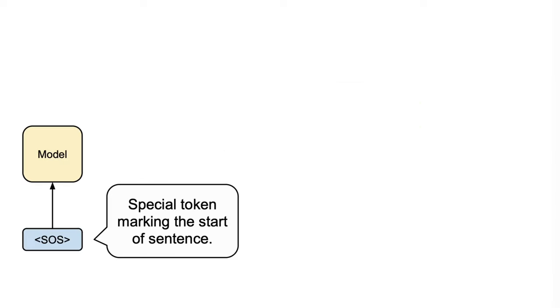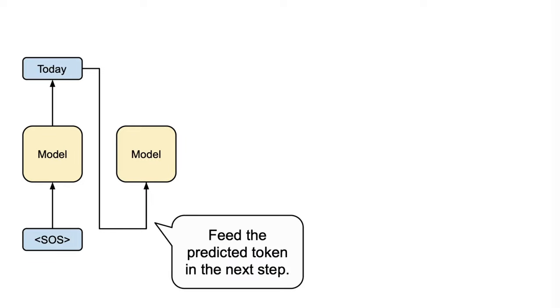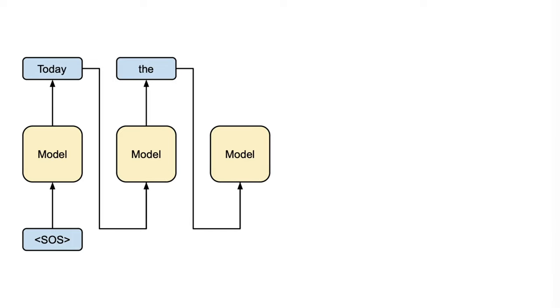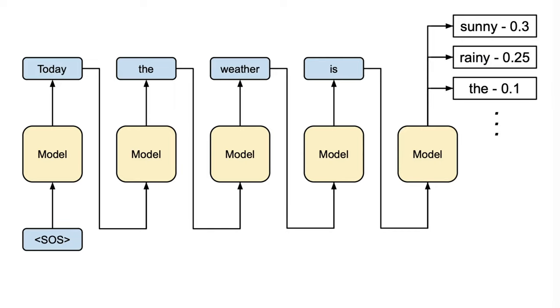In summary, these methods allow practitioners to strike a balance between randomness and determinism, generating diverse and creative text while ensuring that the result remains contextually relevant and coherent, and the choice of which method to employ depends on the specific requirements of the task at hand and the desired characteristics of the generated text.